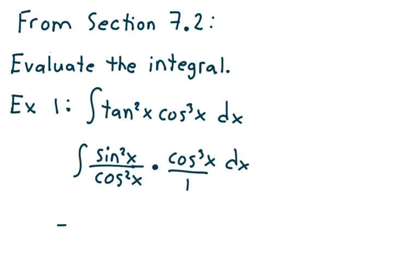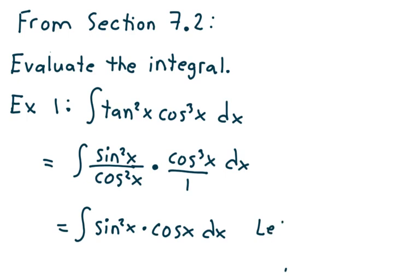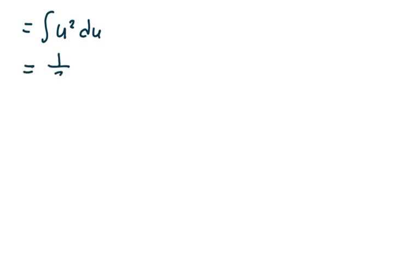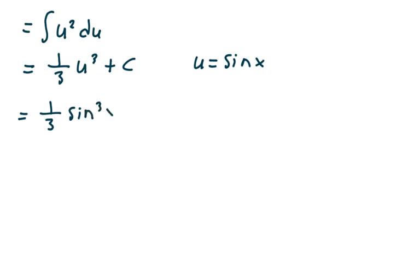If you notice, I can rewrite this as the integral of sine squared x times cosine x dx. The cosine x has already been peeled off, and everything else is written in terms of sines. So I'm going to let u be sine of x, du is cosine x dx. This turns into the integral of u squared du, which is one-third u cubed plus c. Since u is sine of x, this turns into one-third sine cubed x plus c.